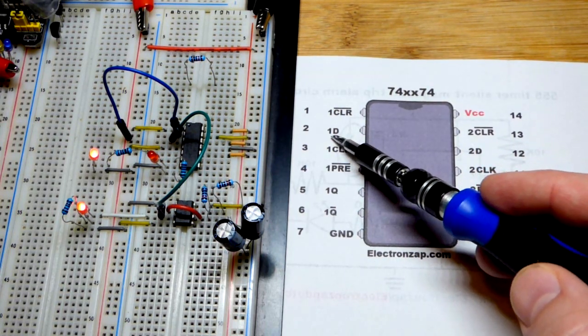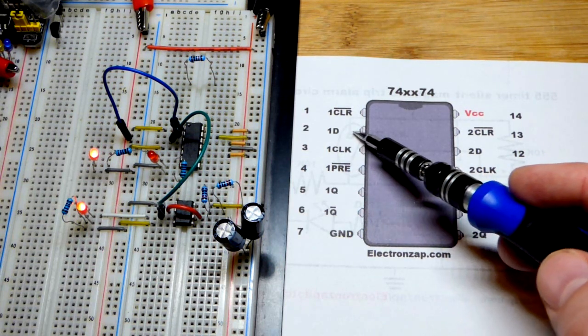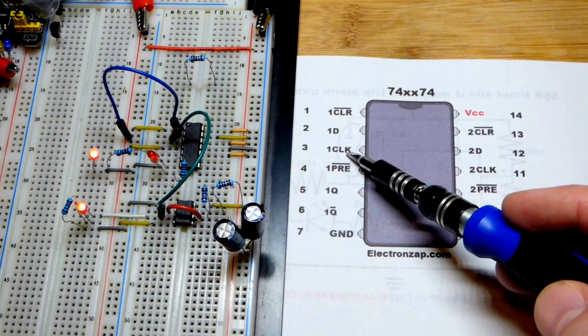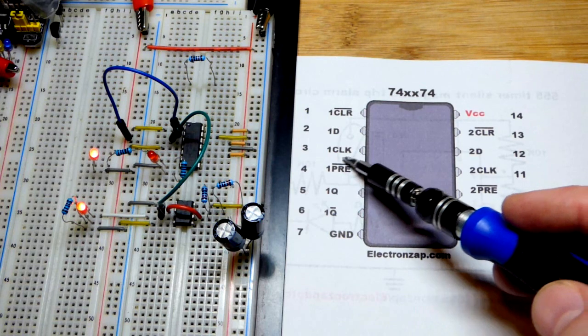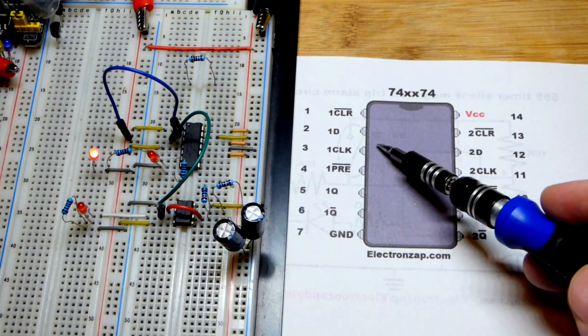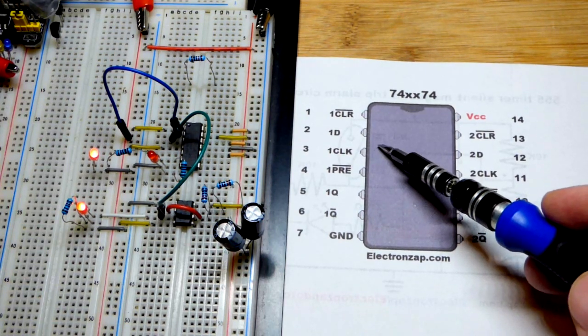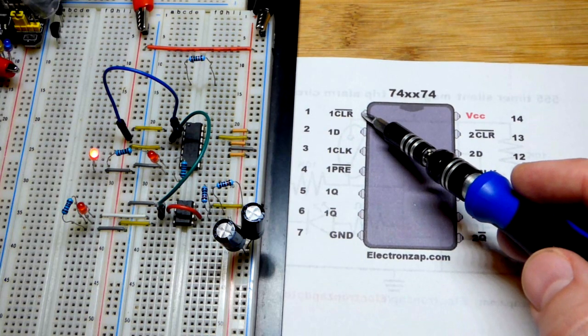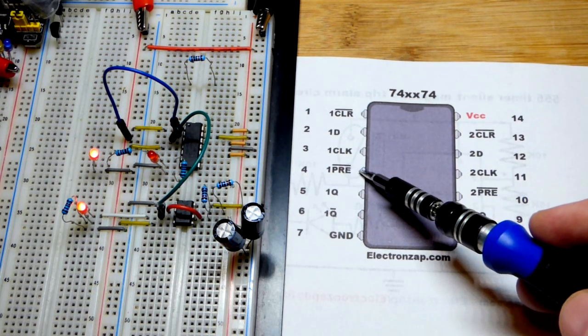It's a D-type, so we've got a data input right there. Positive edge triggered - that's what the clock's waiting for, a high input. And then there's flip-flops in there. We also have a clear pin and a preset pin.